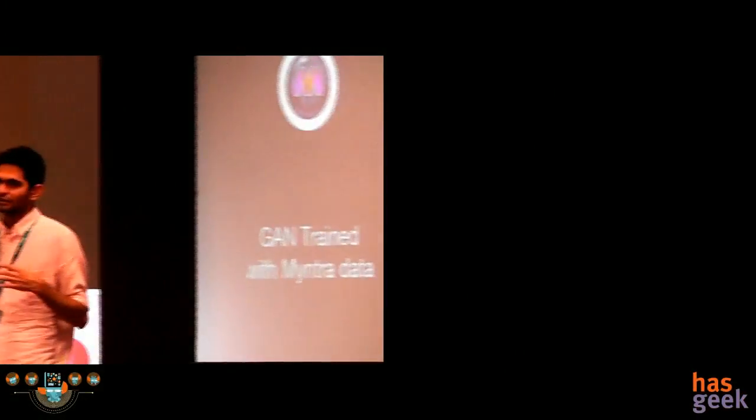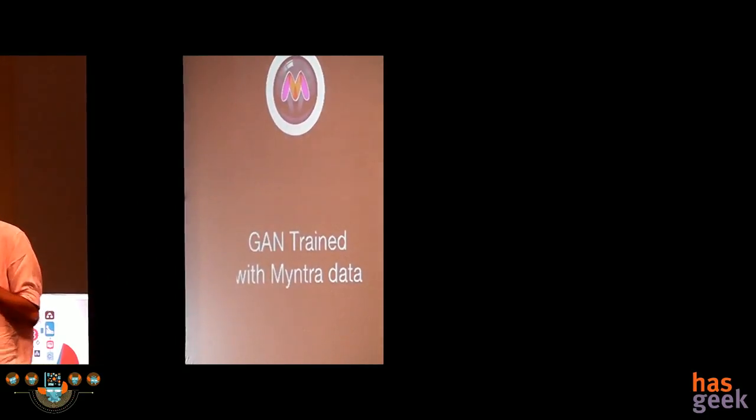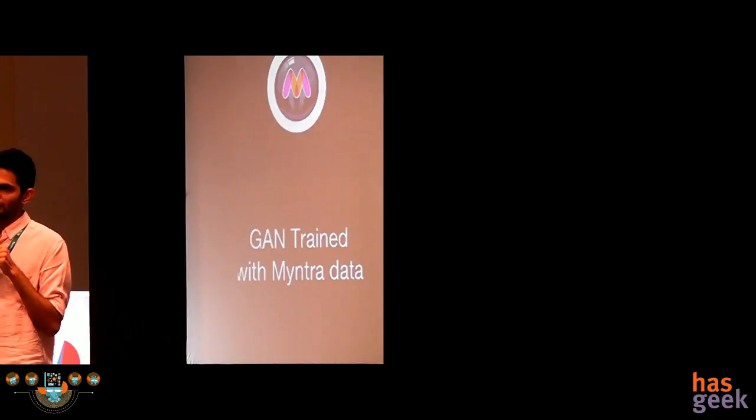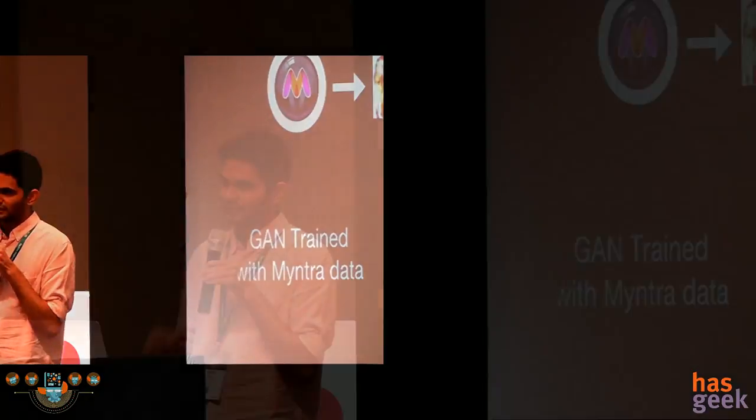We took it as a two-month project to figure out if this is even possible. We tried a lot of methods, and one method that worked really well for us is GAN — generative adversarial networks. GAN has a generator and a discriminator. The generator tries to create new images and the discriminator tries to figure out if it is real or fake — whether the new image suits the dataset or not. We fed Myntra's catalog of t-shirts to this network for the generator to create new images.